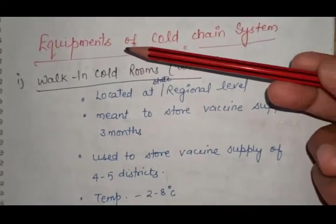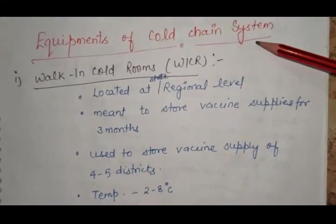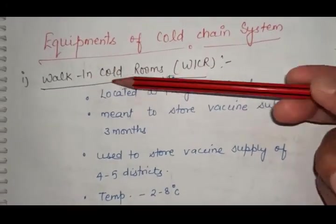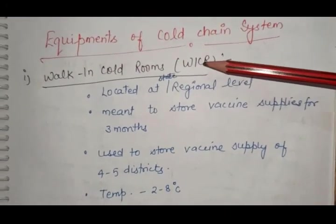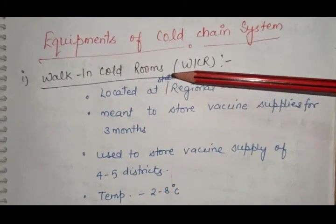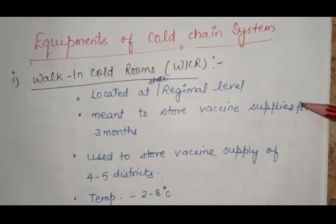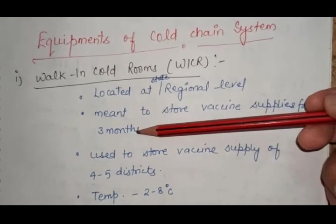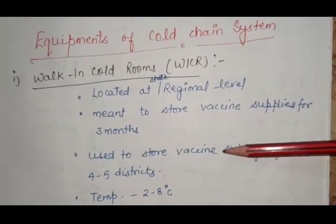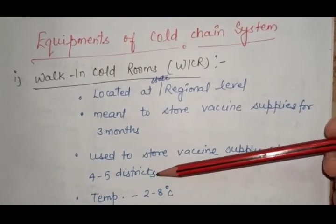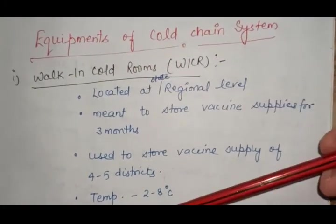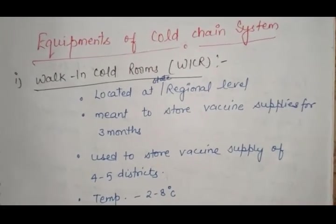Now we will see the equipment of cold chain system. First is walk-in cold rooms or WICR, located at state, national and regional level. These are meant to store vaccine supplies for 3 months, for 4 to 5 districts. Temperature is 2 to 8 degrees Celsius.